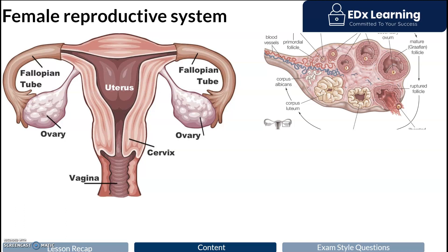I want to start by having a look at the structures involved in pregnancy. You can see the central organ here, which is the female reproductive system — this is the uterus. On either side of the uterus you have these paired tube-like structures known as a fallopian tube.